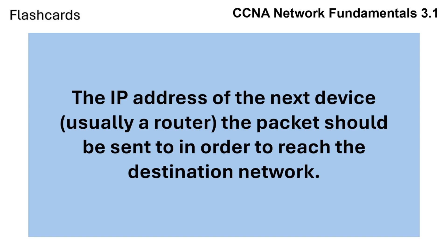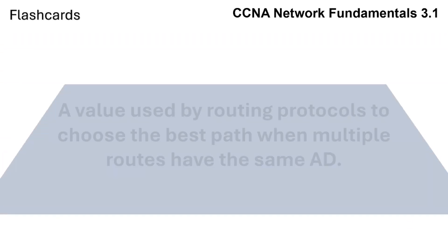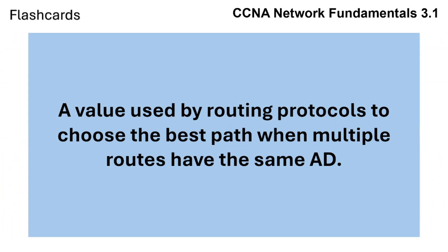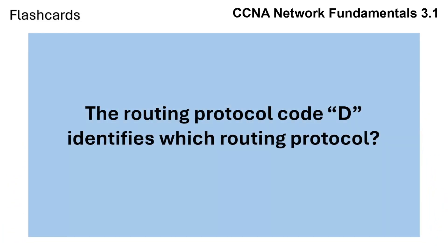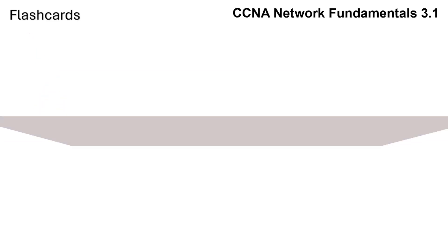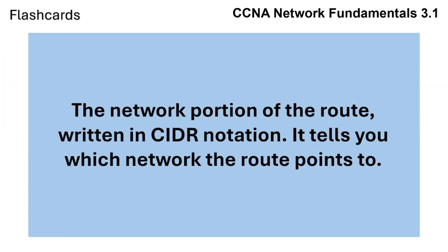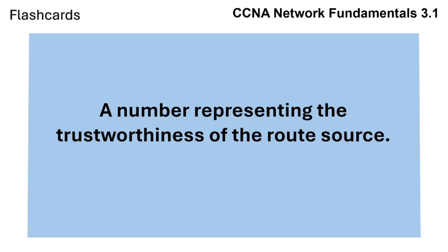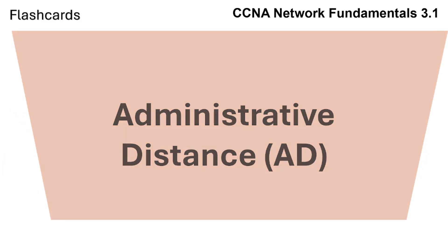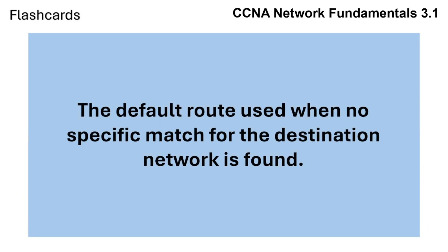To review: the next hop is the IP address of the next device the packet should be sent to in order to reach the destination network. A metric is a value used by routing protocols to choose the best path when multiple routes have the same AD. The routing protocol code D identifies EIGRP. The network portion of the route written in CIDR notation tells you which network the route points to. Administrative distance is a number representing the trustworthiness of the route source. The gateway of last resort is the default route used when no specific match for the destination network is found.